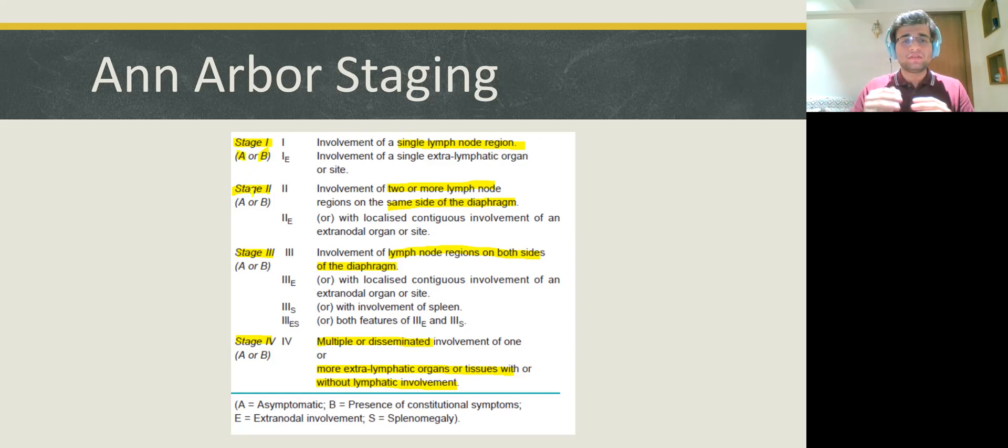Now, we can again classify these stages in another manner. This another manner is the involvement of extra lymphatic organ. If extra lymphatic organs are involved, they are given a subscript of E. If spleen is involved, a subscript of S is given. So, this is Ann Arbor staging. Now, why is this important? Ann Arbor staging in association with the histological subtypes helps determine the prognosis and the treatment of the patient.